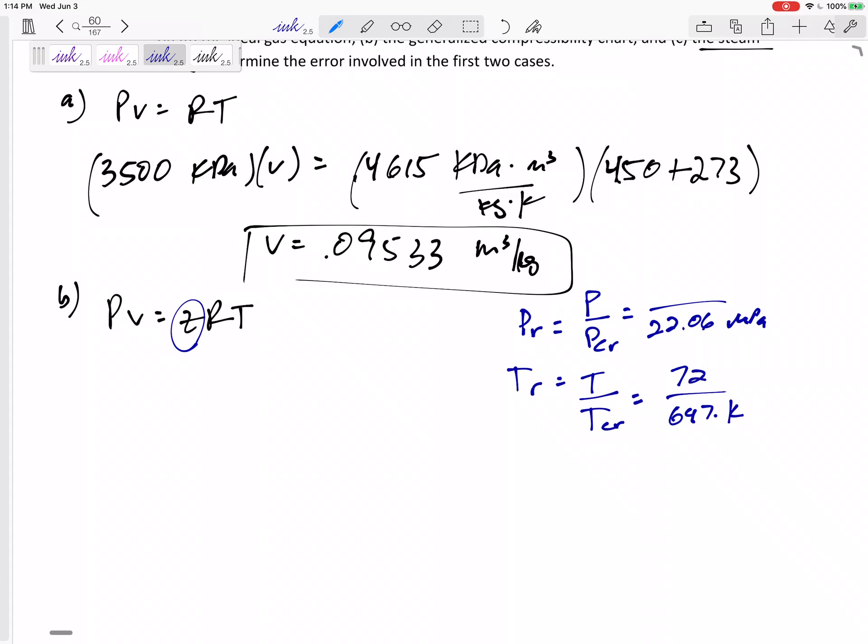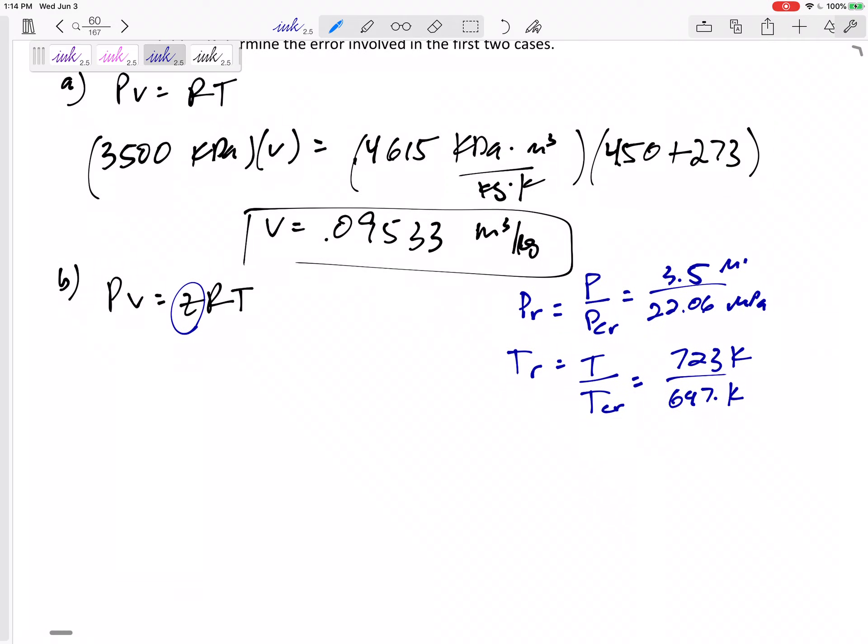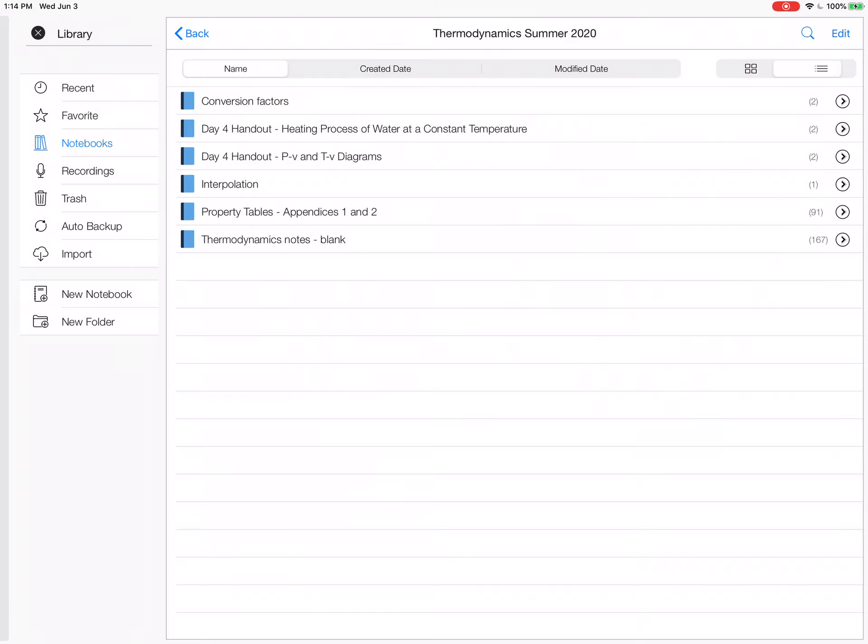All right, my actual temperature is 723 Kelvin. My actual pressure is 3.5 Mpa. All right, so I would get the PR .159, TR 1.12. So I'm going to take these two values to table A15, a reduced pressure of 0.159, a reduced temperature of 1.12. And let's see what Z value that chart gives us.